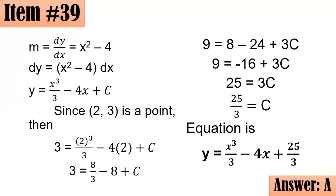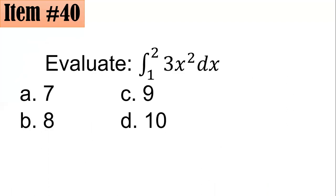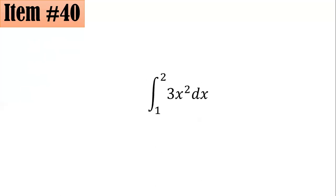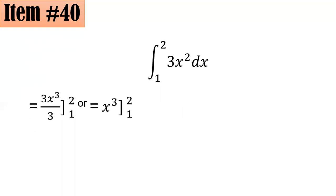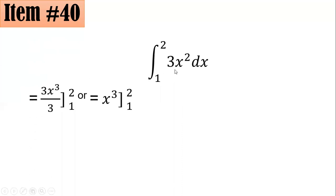Item 40: Evaluate the definite integral of 3x squared as x goes from 1 to 2. Did you answer 7, 8, 9, or 10? This is a definite integral and we use the power rule: add 1 to the exponent to get 3, making it 3x cubed over 3.